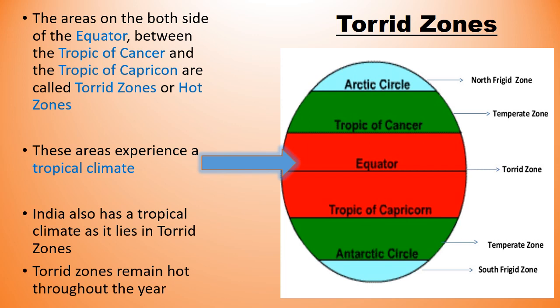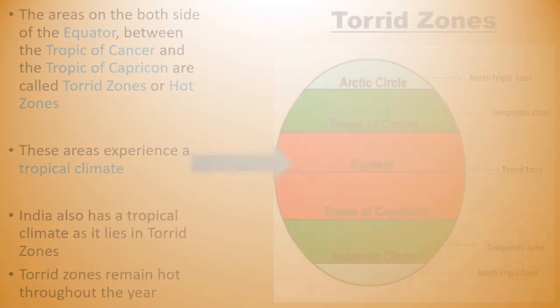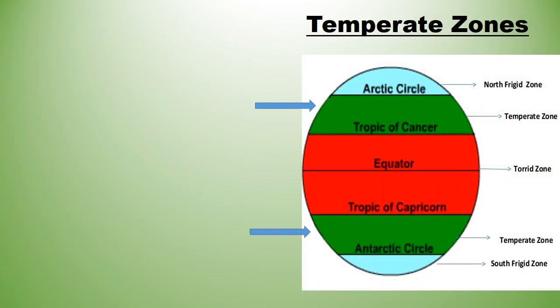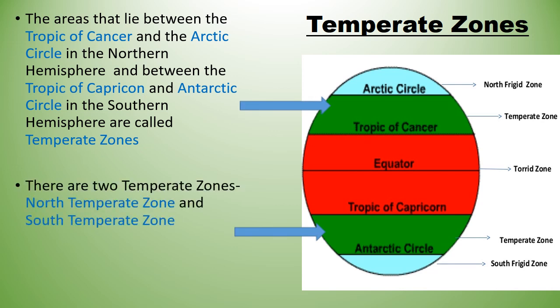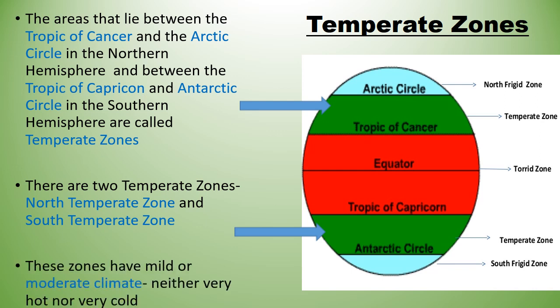Temperate Zones. The areas that lie between the Tropic of Cancer and the Arctic Circle in the Northern Hemisphere, and between the Tropic of Capricorn and the Antarctic Circle in the Southern Hemisphere, are called Temperate Zones. There are two Temperate Zones: the North Temperate Zone and the South Temperate Zone. These zones have a mild or moderate climate, neither very hot nor very cold.